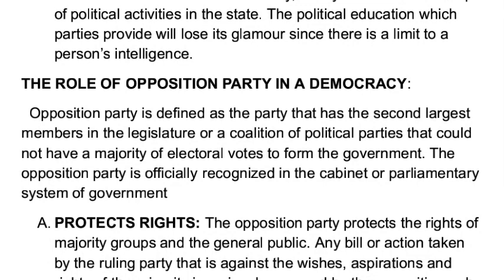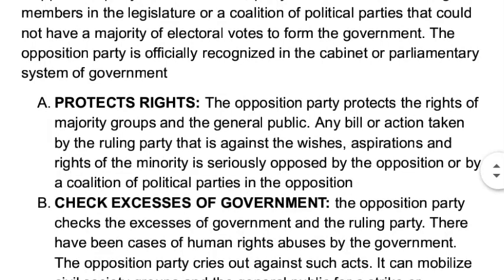The opposition party only exists in a democratic setting of government — it doesn't exist in a military government. The opposition party is defined as the party that has the second largest members in the legislature, or a coalition of political parties that could not get a majority of electoral votes to form the government.